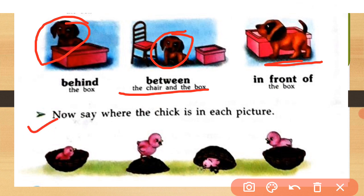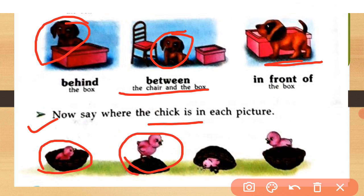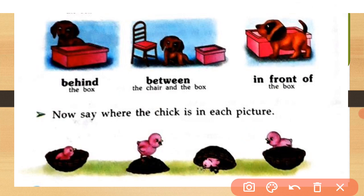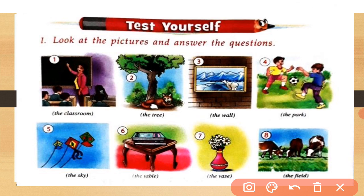Now say where the chick is in each picture. A picture of a basket and chick is given. In the first picture, the chick is in the basket. In the second picture, the chick is on the basket. In the third picture, the chick is under the basket. In the next picture, the chick is behind the basket.